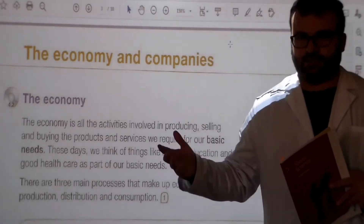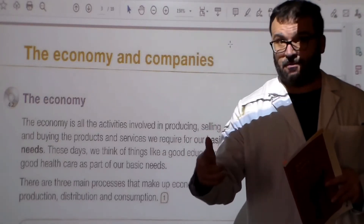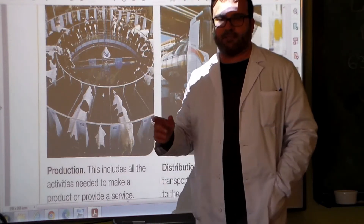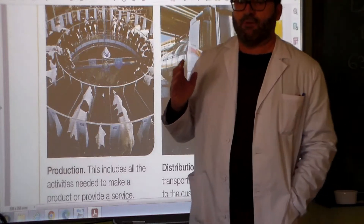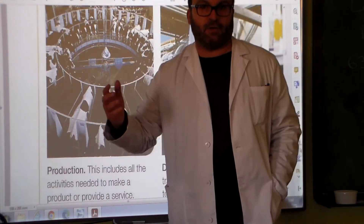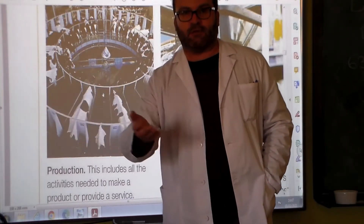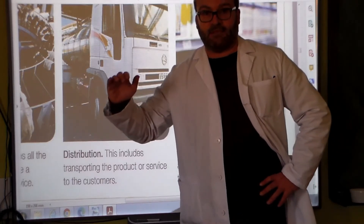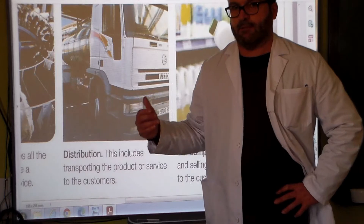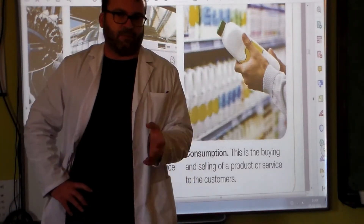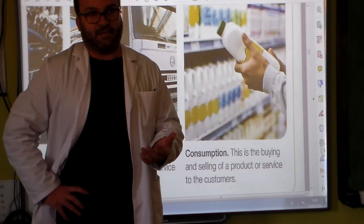This would be the economy in general terms. Production includes all the activities needed to make a product or provide a service — these are the means of production, the basics or infrastructure of the economic system. Distribution: the distribution channels make sure that products reach the customer through transportation. Consumption relates to the buying of products and services by customers — basically, by us.